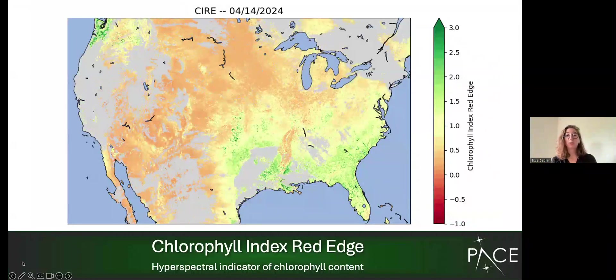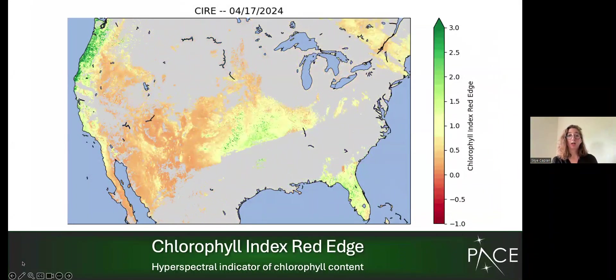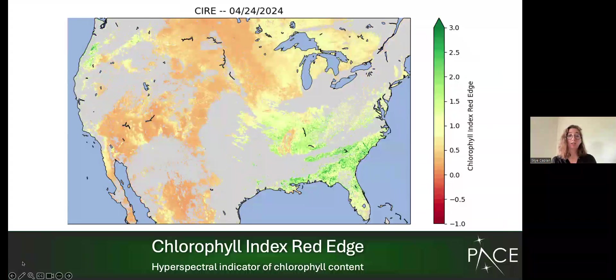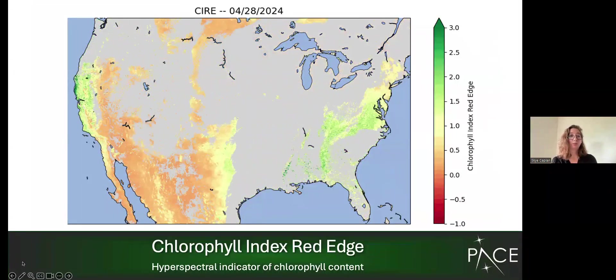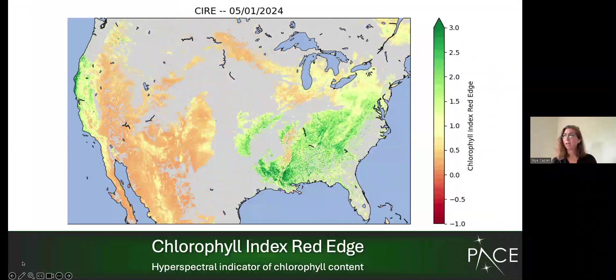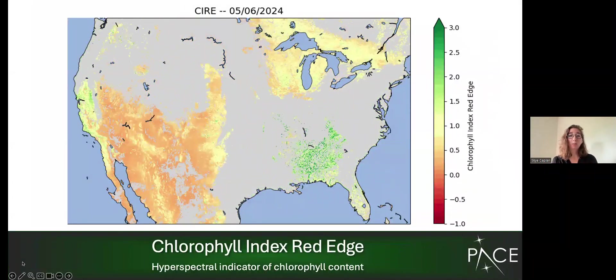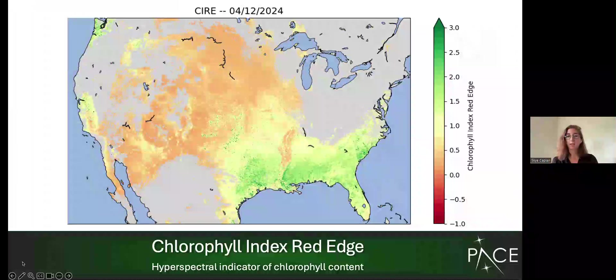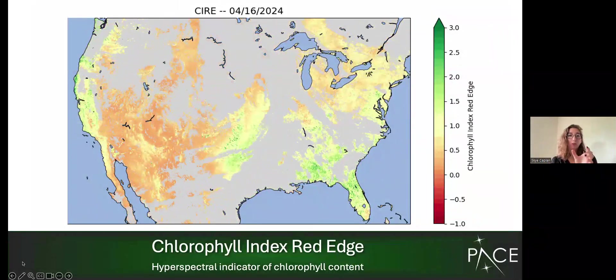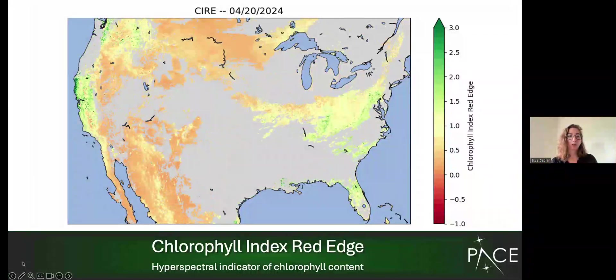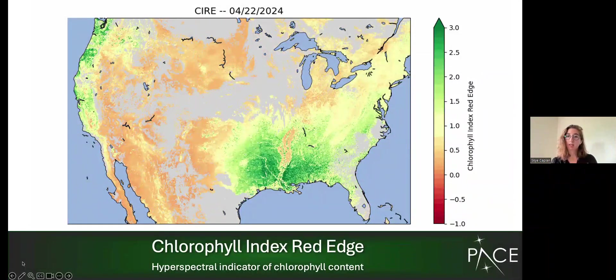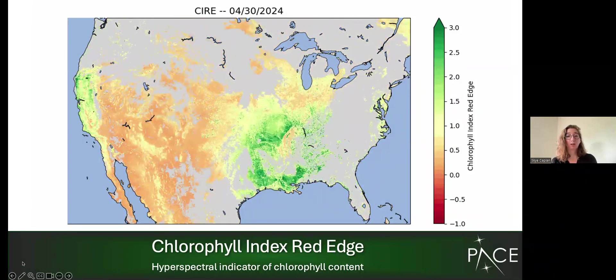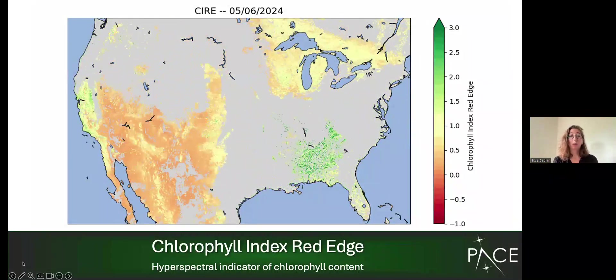So these indices are also most useful when we can look at them over a period of time called a time series. So this is a time series of another index called the Chlorophyll Index Red Edge that gets at the relative chlorophyll content in plants. And that goes from April to May. I think I made it right after we started releasing data. And you can see how much the chlorophyll changes just on a daily basis. If I go back and forth again, you can see the cycle when it goes more dark green. That means there's more chlorophyll in the plant. When it goes more red, yellowy, that means there's less chlorophyll in the plant. And this kind of study is completely unique to PACE, especially for terrestrial science. So we're super excited to start investigating this and to understand what it means for everything from our forests to our farmland.